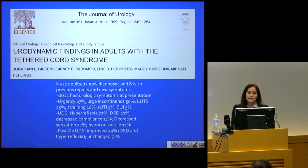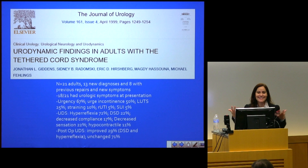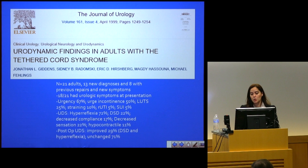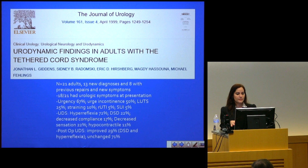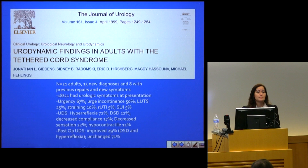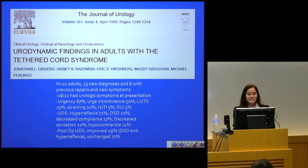Another study looked at urodynamic findings in adults with tethered cord syndrome — all patients with MRI findings. What we want to do now is gather more data on occult tethered cord. In that study, symptoms were mostly storage-related — urgency, frequency, urge incontinence — things that happen during the filling phase. Most of the urodynamics were positive, especially for hyperreflexia — what we now call detrusor overactivity — and detrusor-sphincter dyssynergia. After detethering, follow-up urodynamics showed improvement of those parameters in 29% of cases and unchanged in 71%.